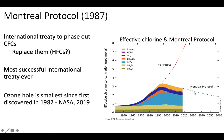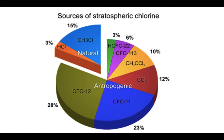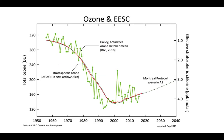Notice that there is a lag — chemicals produced 10 years ago might still be in the atmosphere, so the ozone layer might get a little bit worse before it gets better. But we've done what we can and we're on the right trajectory. If you look at the sources of stratospheric chlorine, the Montreal Protocol handles CFCs, which make up over 50 percent of the sources of stratospheric chlorine — the cause of ozone breakdown. So the Montreal Protocol is a win.